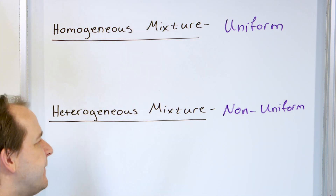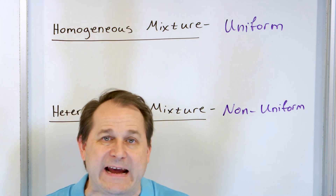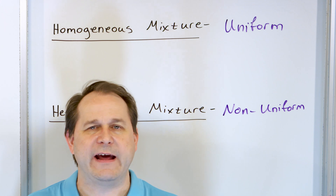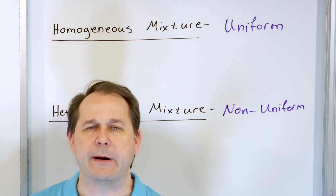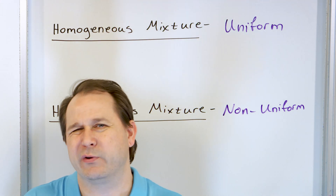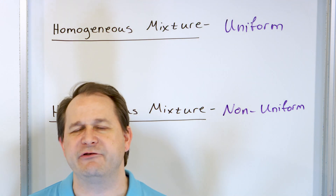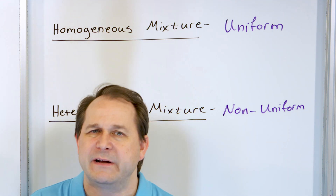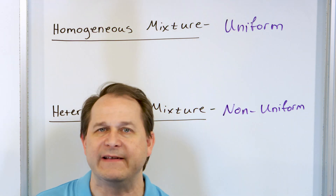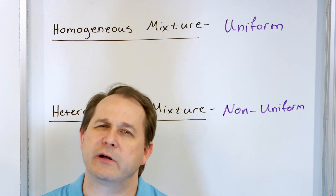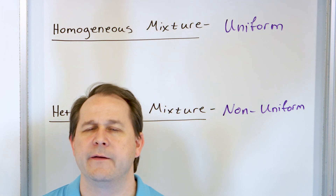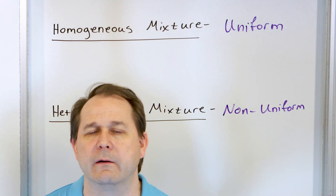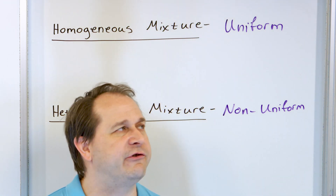For instance, if I take dirt, put it on the bottom and some rocks on top, and I don't really shake it up very much — it's still a mixture. But if I take samples from different parts of that container, I'm going to get a slightly different composition throughout because I didn't shake it very well. So that's a heterogeneous mixture.